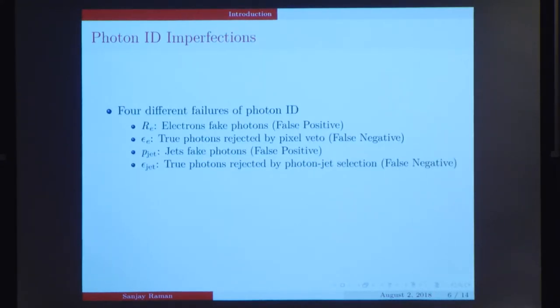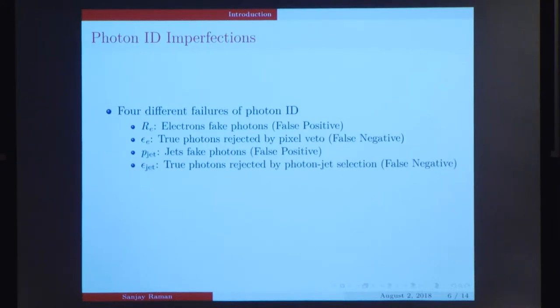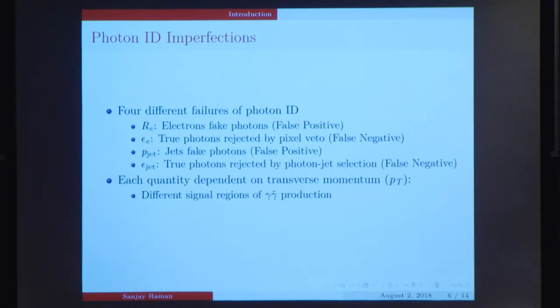However, this photon ID is not perfect, and we end up letting in many false positives and false negatives. These can be summarized by four different quantities. First we have the electron fake rate, which gives us a handle on how often electrons are falsely recognized as photons. We then have the electron photon efficiency, which is how often the photons are rejected by the electron photon ID, or false negatives. We also have similar quantities for jets. The photon jet purity gives us a handle on how often jets fake photons, and the electron jet efficiency gives us a handle on how often photons are rejected by the jet ID. Each quantity is dependent on the transverse momentum of particles within the detector. We're especially interested in this dependence because the different signal regions for the dark photon process occur in different ranges of transverse momentum. So we're interested in finding the fake rates and efficiencies in different bins of transverse momentum.